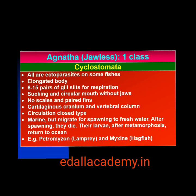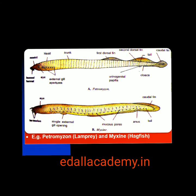All living members of class Cyclostomata are ectoparasites on some fishes. They have an elongated body bearing 6–15 pairs of gill slits for respiration. Cyclostomes have a sucking and circular mouth without jaws. Their body is devoid of scales and paired fins. Cranium and vertebral column are cartilaginous. Circulation is of closed type. Cyclostomes are marine but migrate for spawning to fresh water. After spawning, within a few days, they die. Their larvae, after metamorphosis, return to the ocean. Examples: Petromyzon, also called lamprey, and Myxine, also called hagfish.